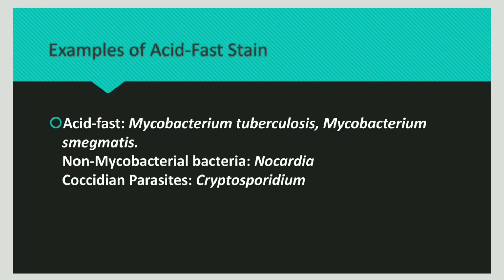Now let us discuss examples of acid-fast staining. The acid-fast bacteria are Mycobacterium species, for example Mycobacterium tuberculosis. Non-Mycobacterium species are non-acid-fast bacteria.